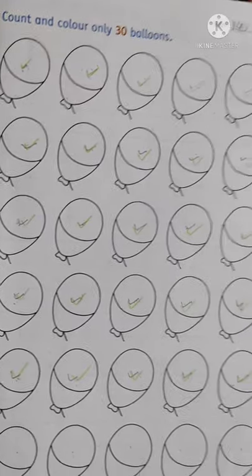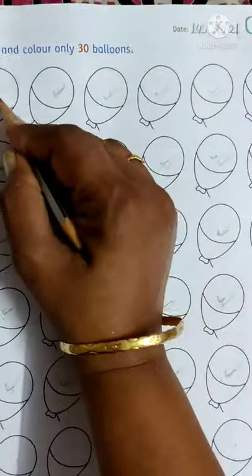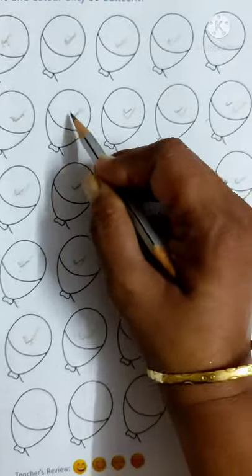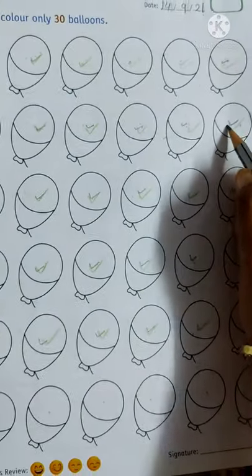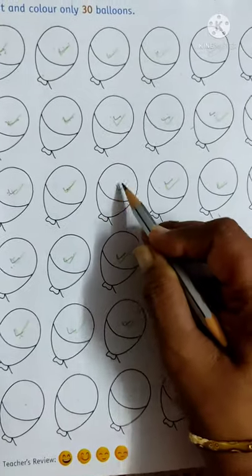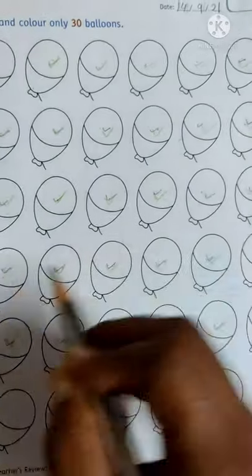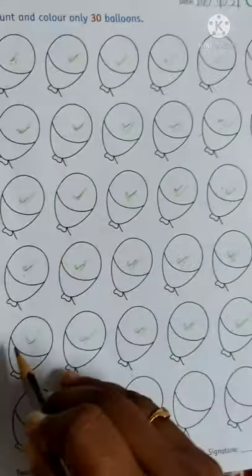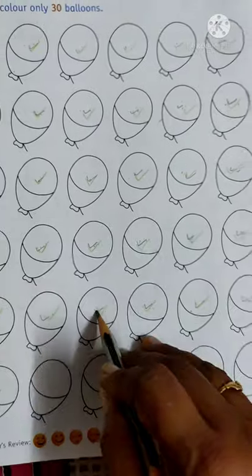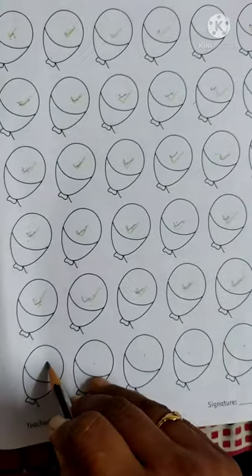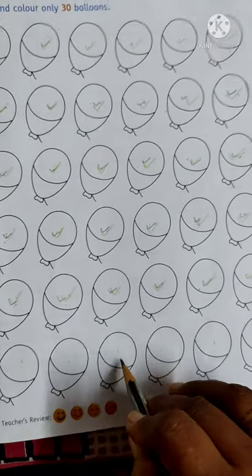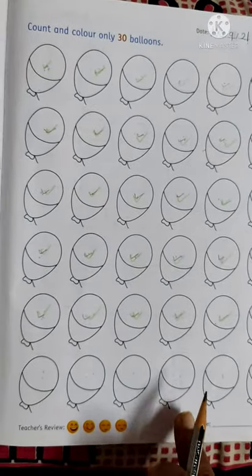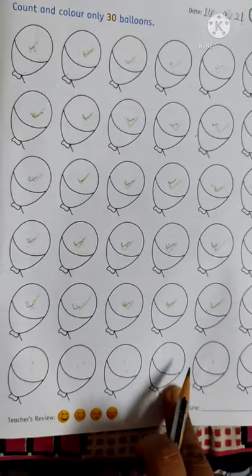Come on kids, now start counting with me. See the total balloons: 1, 2, 3, 4, 5, 6, 7, 8, 9, 10, 11, 12, 13, 14, 15, 16, 17, 18, 19, 20, 21, 22, 23, 24, 25, 26, 27, 28, 29, 30, 31, 32, 33, 34, 35, 36. The total balloons are 36 and we have to color only 30 balloons.